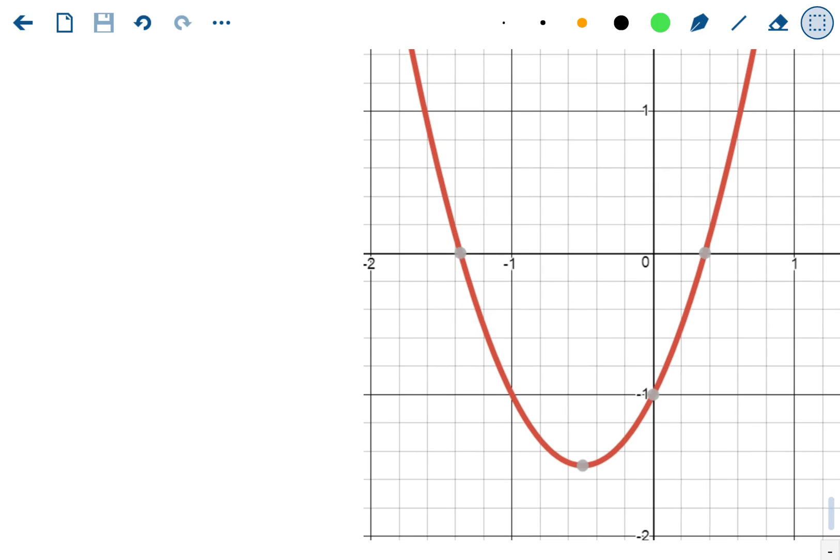The axis of symmetry is the line that cuts the graph in half. This one's here at, it looks like 0.5. This is just an invisible line, it's not really part of the graph, it's just a line that cuts the entire parabola in half so you can fold it on top of itself. Axis of symmetry means it's perfectly symmetric.